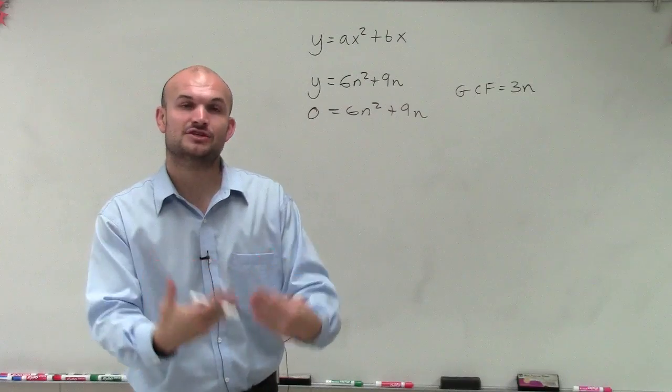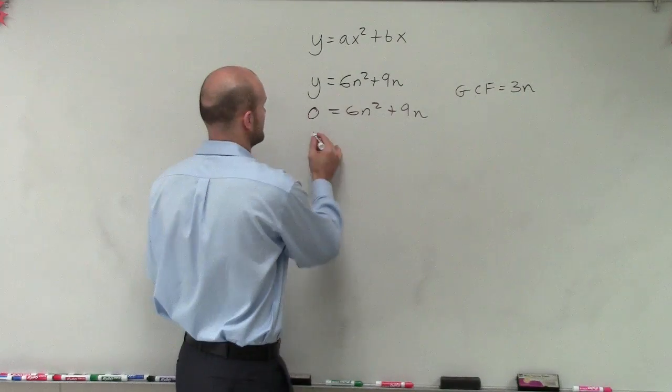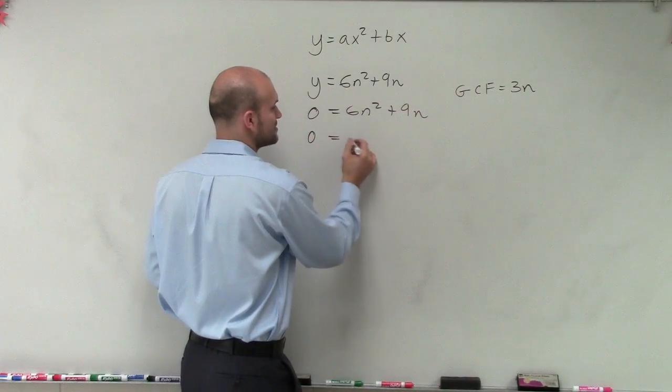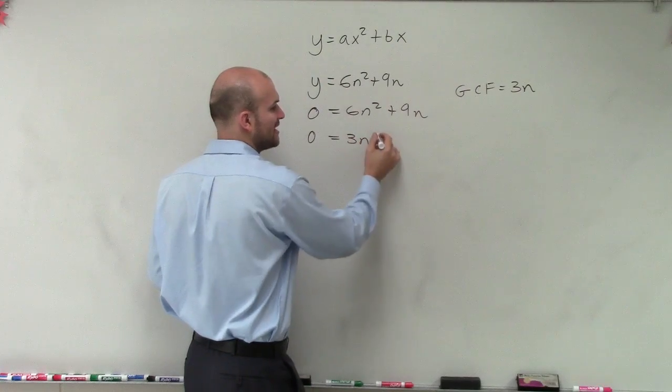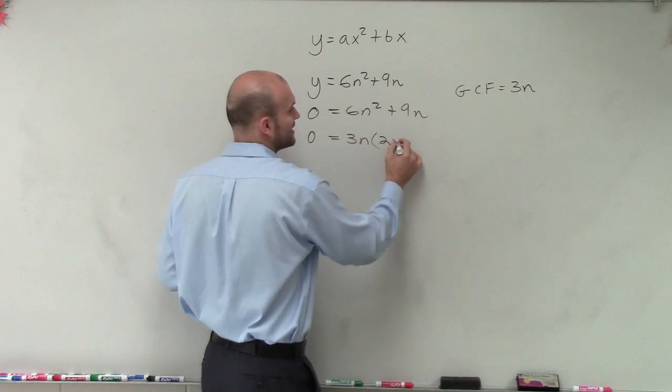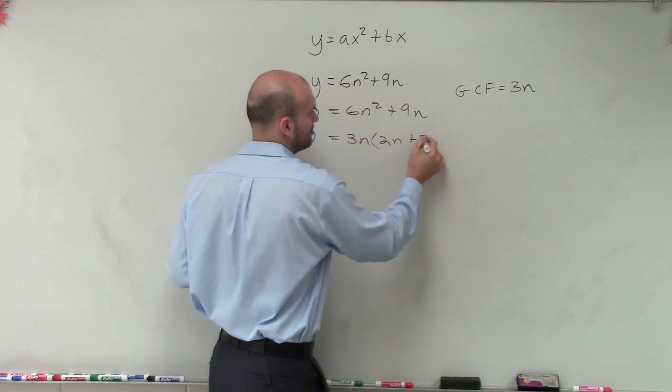So now once we have our greatest common factor, we're going to factor that out. So therefore, we get 0 equals factor out a 3n, which is kind of another way of saying dividing it out. And I get 2n plus 3.